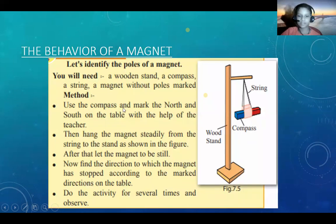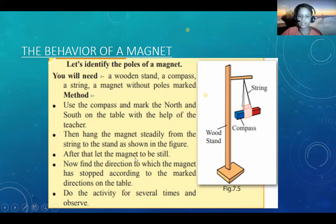Method: use the compass and mark the north and south on the table with the help of the teacher. Then hang the magnet gently from the string to the stand as shown in the figure. After that, let the magnet become still. Now find the direction to which the magnet has stopped, according to the marked direction on the table. Do the activity several times and observe.